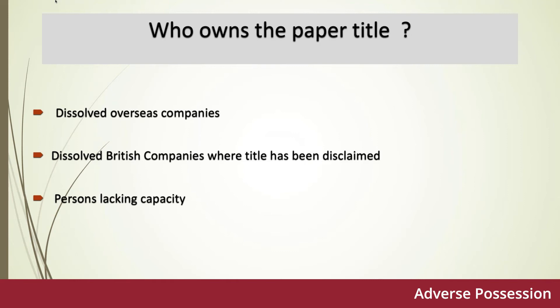If the applicant is a defendant in proceedings which involve asserting a right to possession of the land — so a declaration of the court or First-tier Tribunal as to ownership has been sought, or judgment for possession has been given in favour of the paper title owner against the applicant in the last two years — that would also preclude a claim for adverse possession being made.